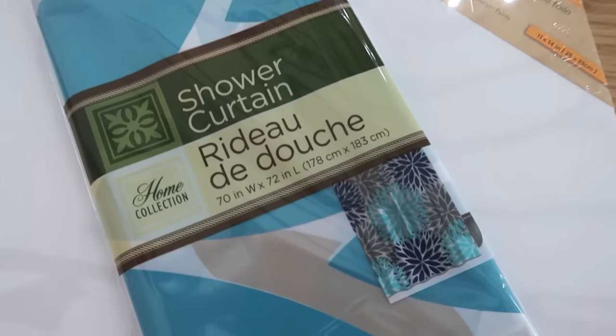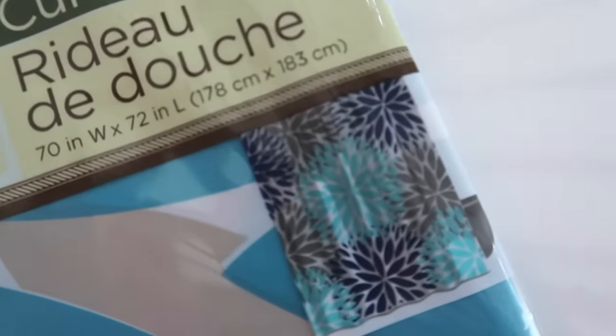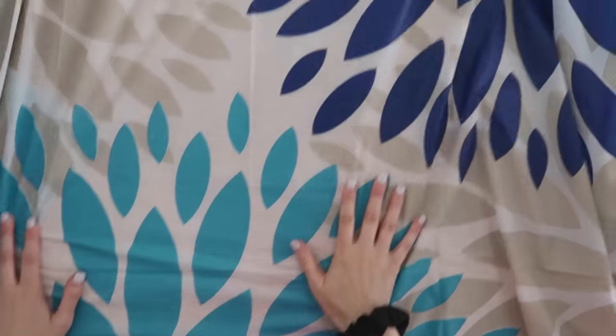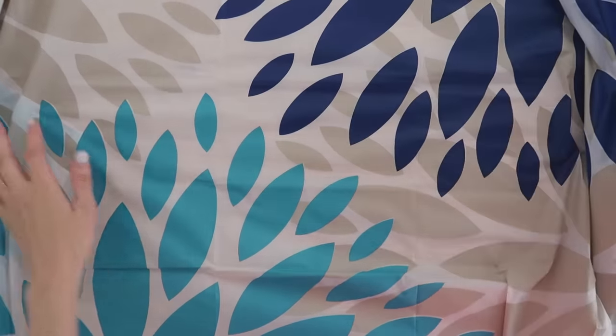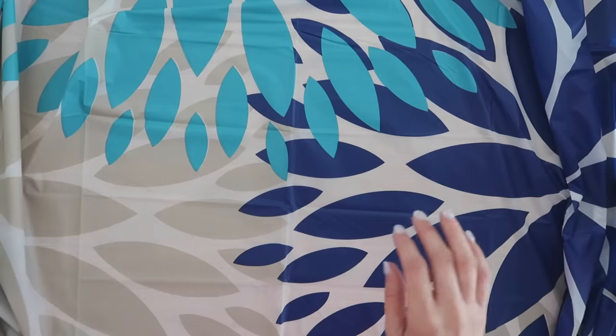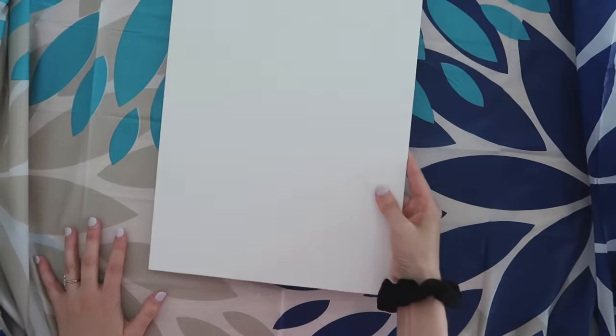Up next, we're going to use that really pretty shower curtain that I showed you before. I love the colors in this, really bright and also really decorative too. So we're going to take a canvas from Dollar Tree, it is the larger 11 by 14 size. And I just kind of laid out the shower curtain until I found a spot that was really pretty that I liked. And this was a great spot because all three of those colors kind of mesh together.